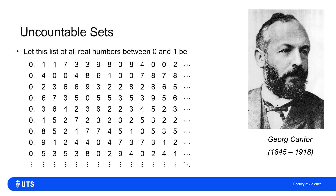So let's start by listing everything which I'm going to claim is a list of all real numbers between zero and one. So 0.1173398084002, and so on, is one of those. Each line is a different real number between zero and one, with infinitely long decimal expansions. I'm going to assume that that is the set of all such numbers and that it's a countably infinitely long list.